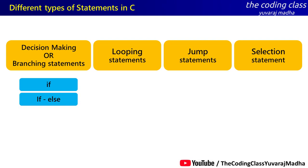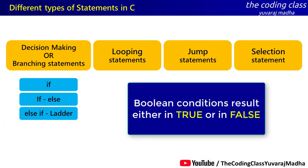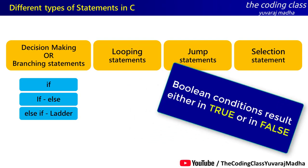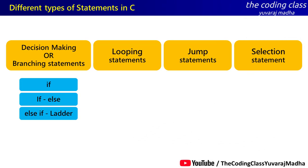If-else allows you to use a condition and execute code on the basis of that statement. This is a control statement. These conditions use boolean values — conditions that evaluate to true or false. So the three statements — if, else, and else-if ladder — are used with boolean conditions. If the condition is true, one block runs; if false, another block runs. These statements are used to control the program — this is decision making.